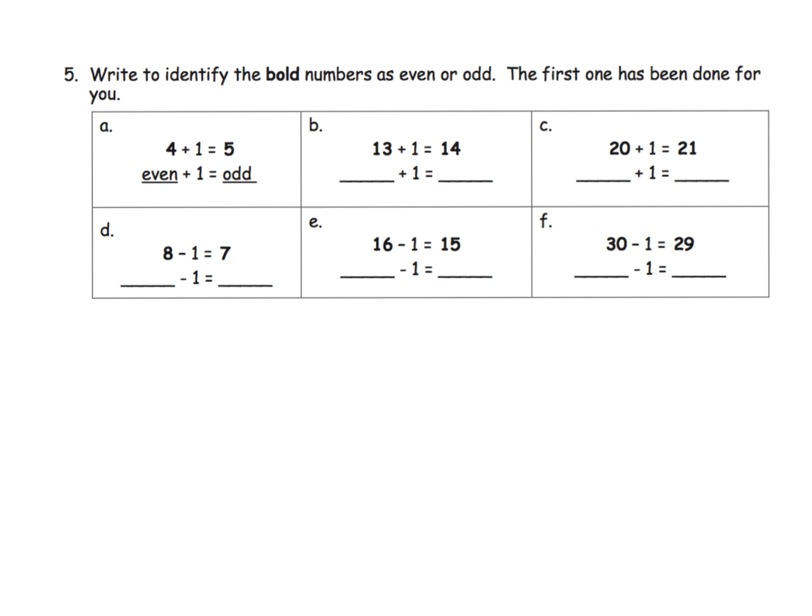And here's where we're really just solidifying that concept of a pattern. The idea is if you have four and you add one you get five, and then four is even and five is odd. So if you add one to an even you get an odd. We could take a look at that same concept with eight minus one equaling seven. Well, eight is even.